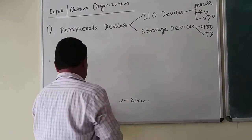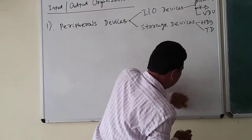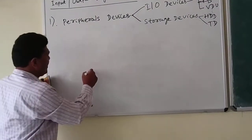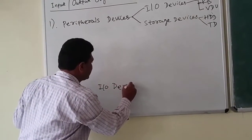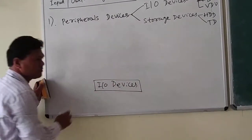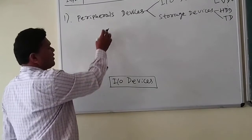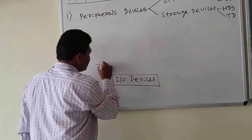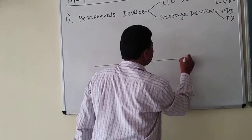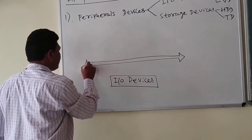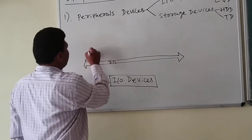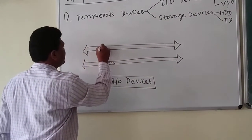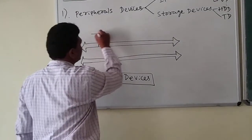Now we know about the I/O devices and their type. To connect these I/O devices to the CPU, it requires a bus. That bus consists of an address bus, data bus, and control bus — three buses in total. The data bus carries data, and the control bus carries control signals.